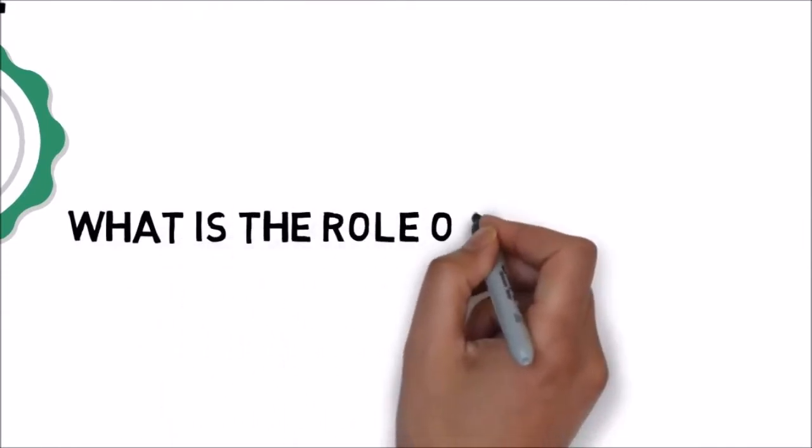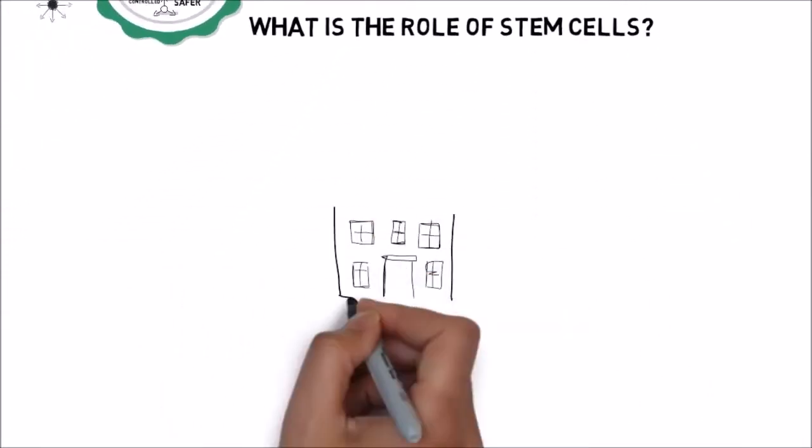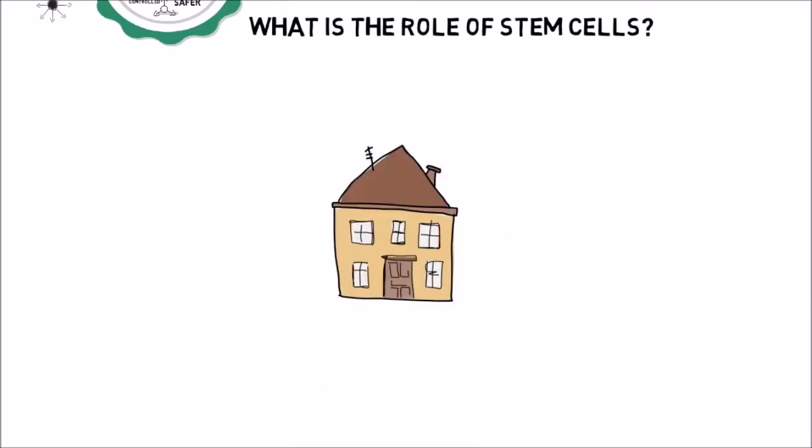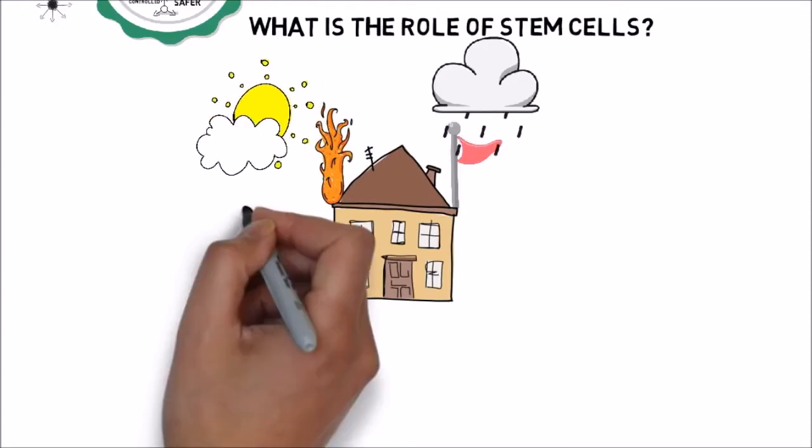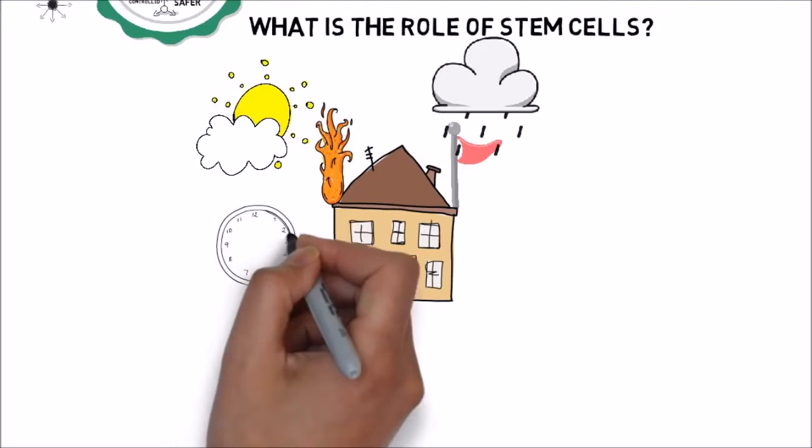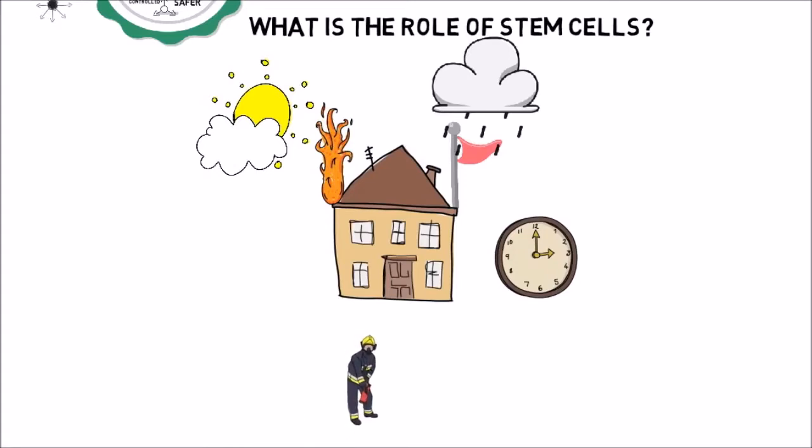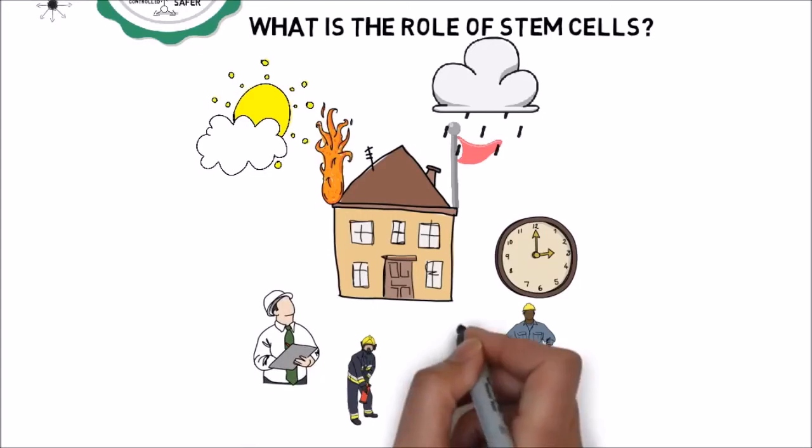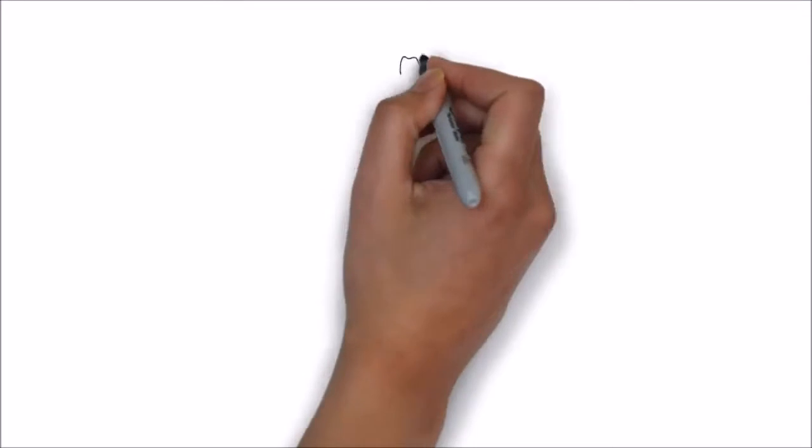What is the role of these stem cells? To understand this better, let's look at this example. Your house is exposed to different elements such as wind, fire, rain, sun, and time. All cause damage to the structure. To keep your house in order and repair any damage, you need different professionals like firefighters, construction workers, insurance agents, and a contractor to supervise and direct the project.